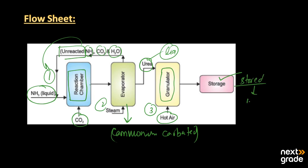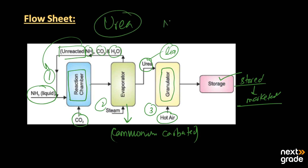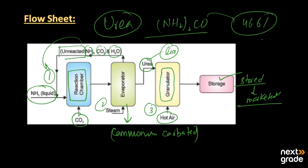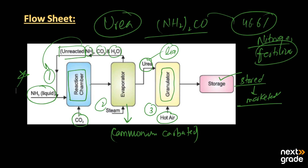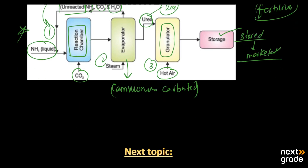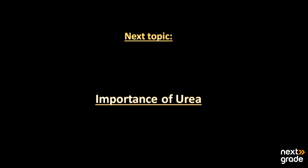This is the simple process of the formation of urea. The formula of urea is (NH₂)₂CO and it contains about 46.6 percent nitrogen, making it an excellent fertilizer. I hope you understood today's lecture. If you have any queries, you may ask. The next topic we will discuss is the importance of urea. Keep learning and have a good day.